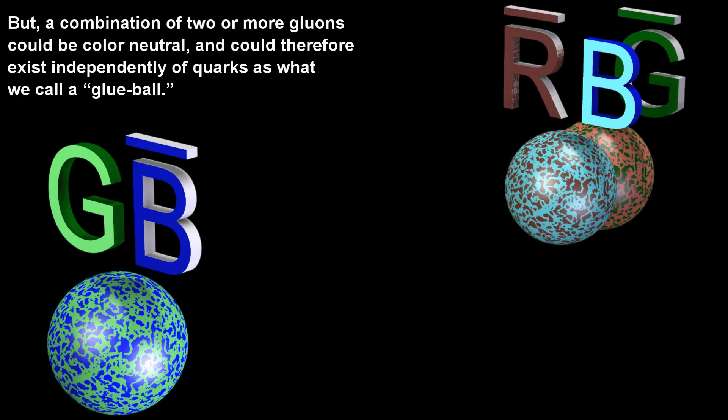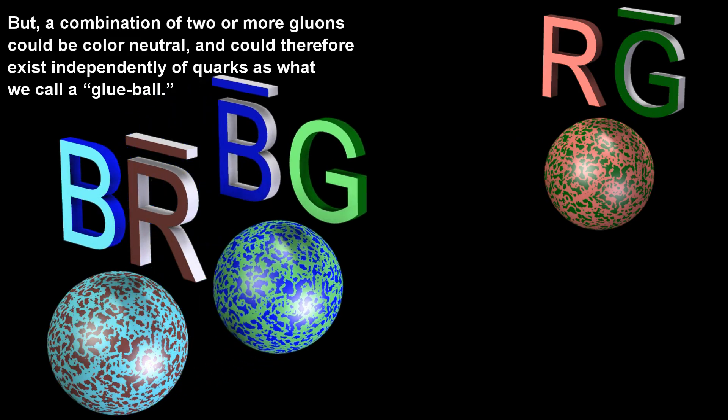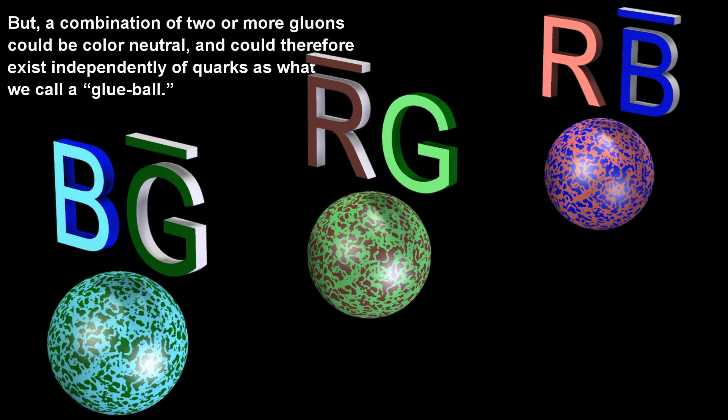But a combination of two or more gluons could be color neutral, and could therefore exist independently of quarks as what we call a glue ball.